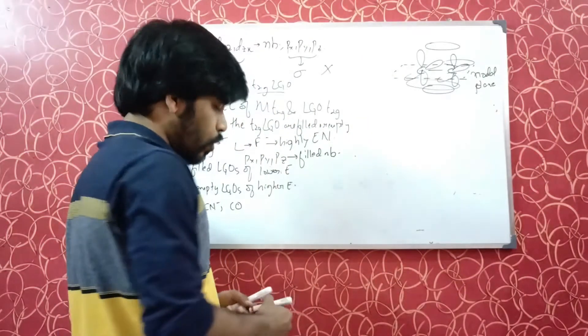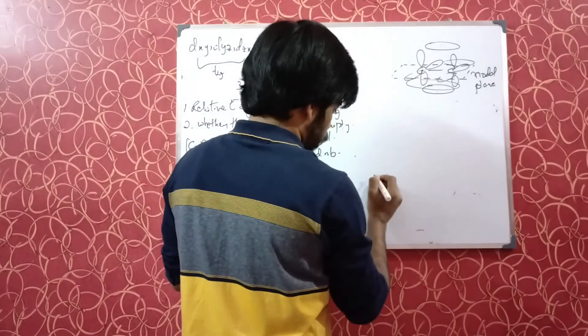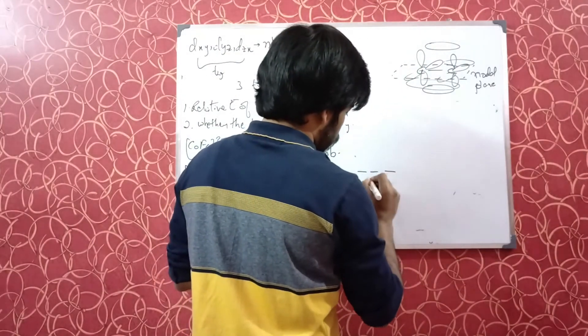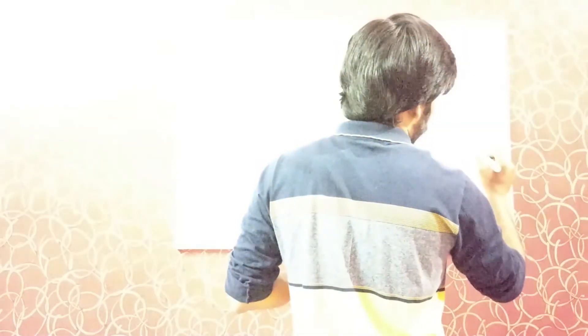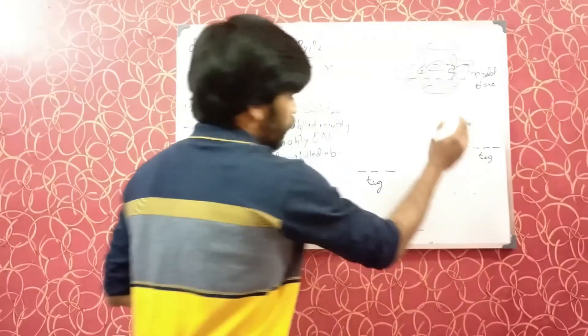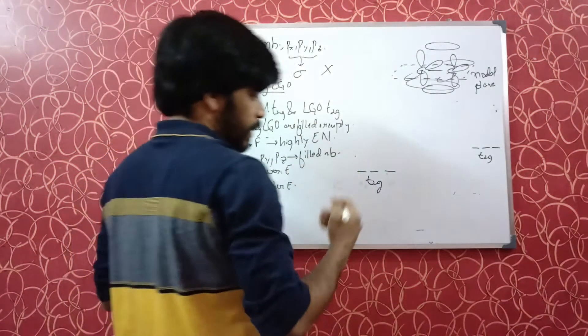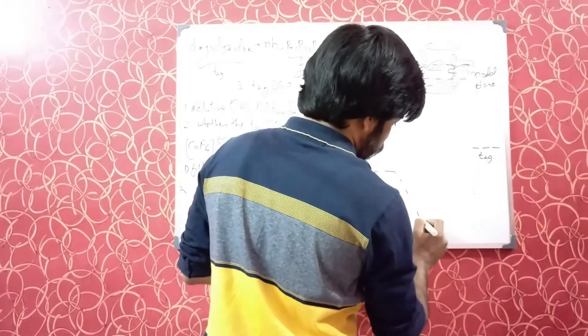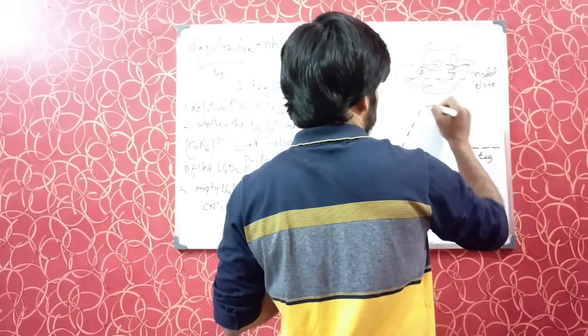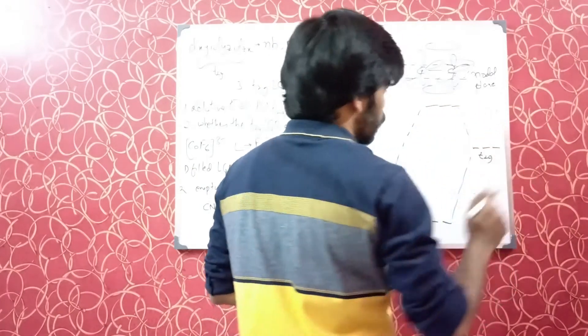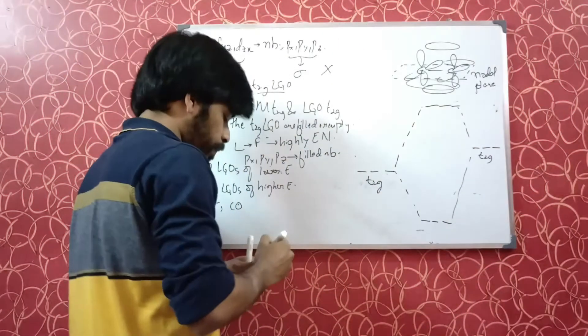Let's say you have here the metal T2G orbitals and here the ligand group orbital T2G orbitals. Now the energy of the ligand group orbitals has increased. So this will come here, the anti-bonding will be here. So nothing much has changed, it's almost the same.